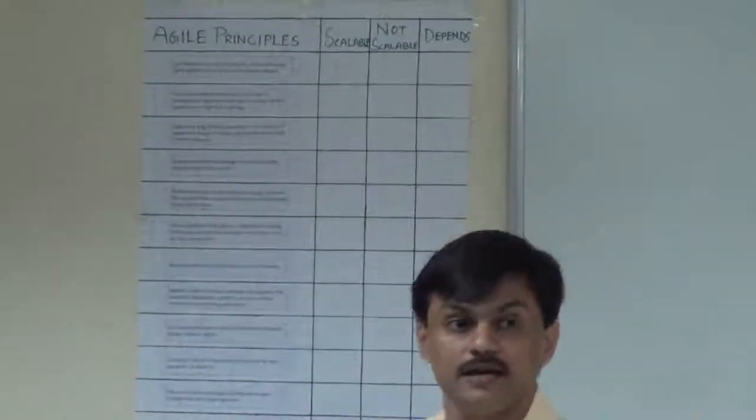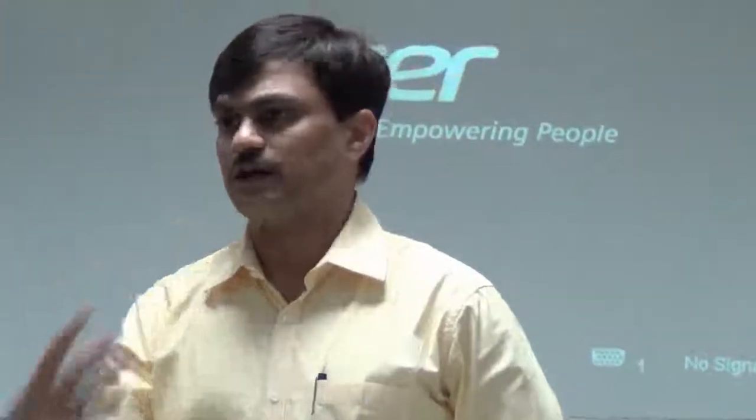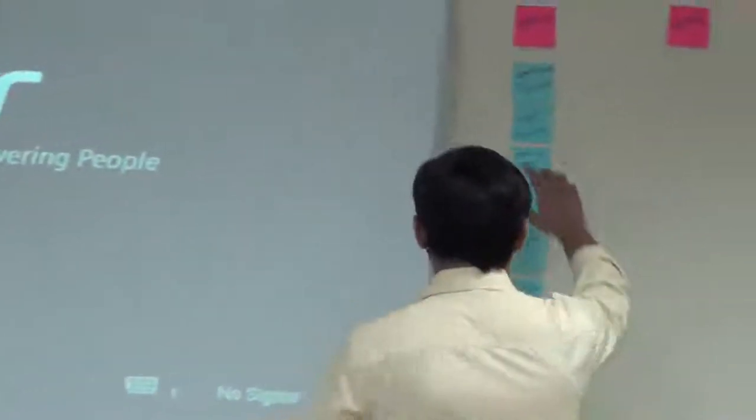So we first need to understand what is agile and what kind of process, approach, things, which we need to build into agile process to make it scale. Now we can use Scrum as an example. So whenever you talk about agile, you look at the principles and you can map it to Scrum to keep the things simple. So we can just summarize that how do scales come and what kind of problem it is. So that's the second thing.